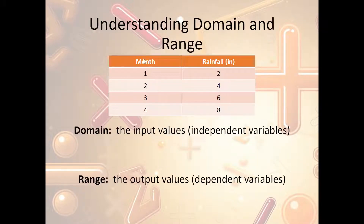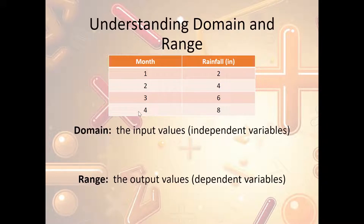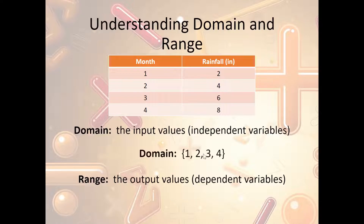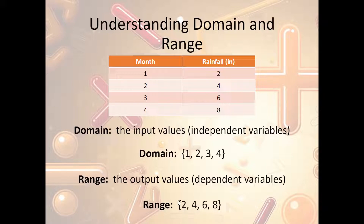We're given a table and we'll pick out the range and domain. The input values — in this case, the month — are our domain. The values are 1, 2, 3, and 4, so the domain is {1, 2, 3, 4}. The range values are 2, 4, 6, and 8. For a second table, the domain is {0, 2, 3, 6} and the range is {6, 3, 4, 8}.